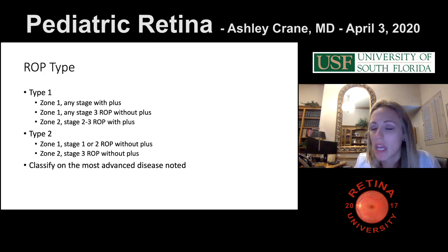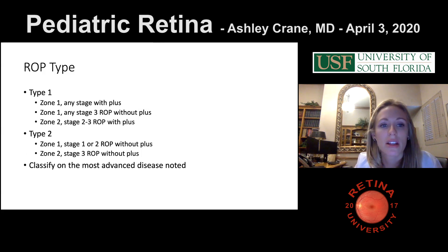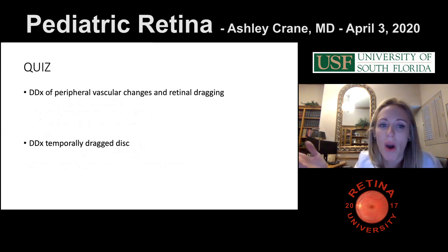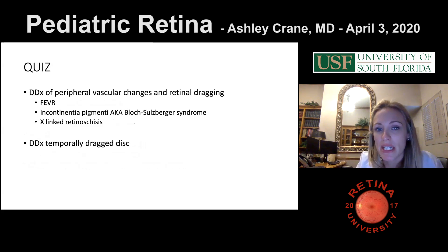The types of ROP — type 1 and type 2 — are classified on the most advanced disease noted. What's the differential diagnosis of peripheral vascular changes and retinal dragging? FEVR, incontinentia pigmenti, and X-linked retinoschisis are things you should know about.